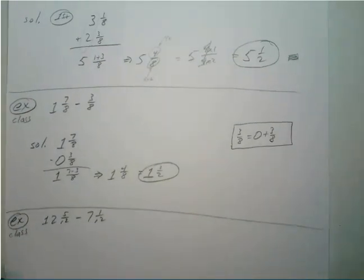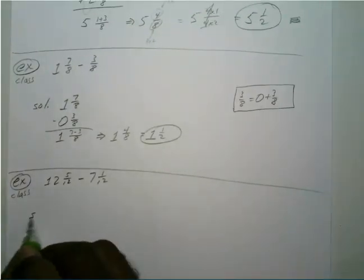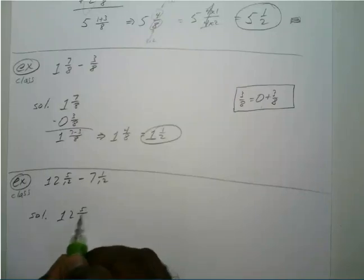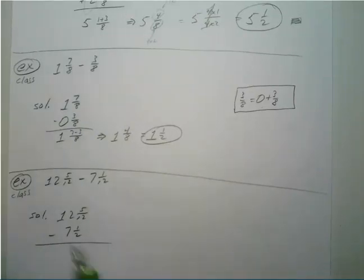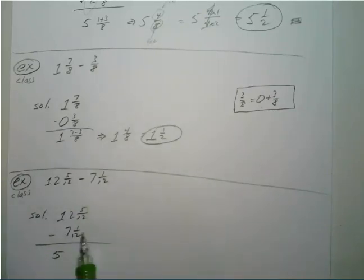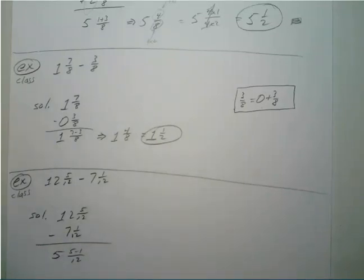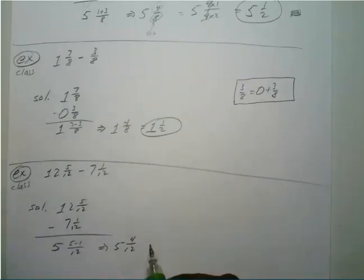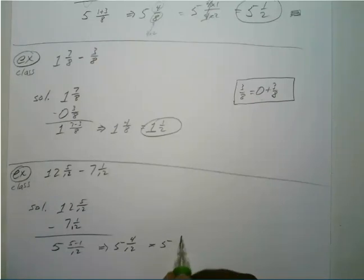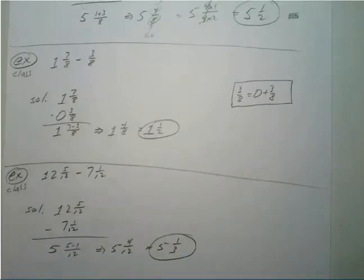For the second problem, twelve and five-twelfths minus seven and one-twelfth. We have twelve minus seven which is five, and since we have the same denominator, five minus one over twelve gives four-twelfths. Simplified, four-twelfths equals four times one over four times three, and the fours cancel, giving us five and one-third as our final answer.